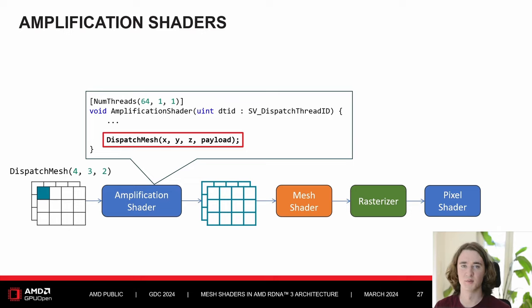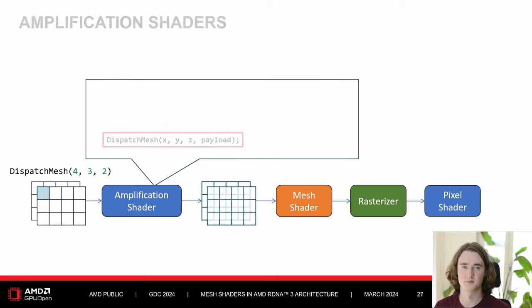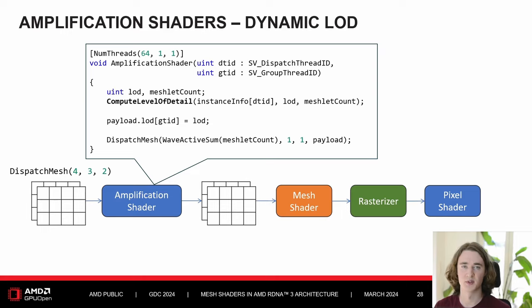One way to go faster is to render less geometry using a level-of-detail system. With the amplification shader, we can dynamically select the LOD to render on the GPU. We launch one amplification shader thread per instance, that thread determines the appropriate LOD using, for example, distance to the camera, then we sync up with all other threads in the thread group. Using wave intrinsics, we sum up the required number of mesh shader thread groups and dispatch them, passing LOD information per mesh shader thread group in the payload.